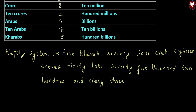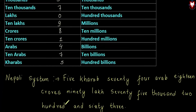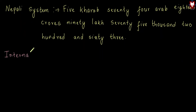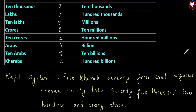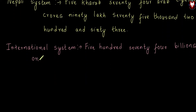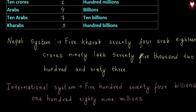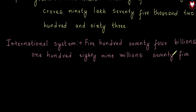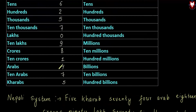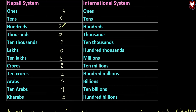So the Nepal system number is now converted to the international system: 574 billions, which means 189 millions, that means 189 millions. So after millions, we have 0 in the hundred-thousands place, meaning we count 10,000s — that means 75,000. So we have 263 remaining.